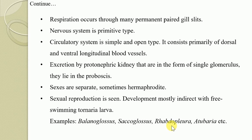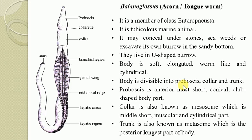We are going to discuss short features of two examples: Balanoglossus and Rhabdopleura. Balanoglossus is commonly known as the acorn worm and is a member of class Enteropneusta, characterized by having a straight alimentary canal. It is a tubiculous marine animal inhabiting shallow water between tide marks along the coast of warm and temperate oceans. It may conceal under stones or seaweeds, or excavate its own U-shaped burrow in sandy or muddy bottom, at a depth of 50 to 75 centimeters.